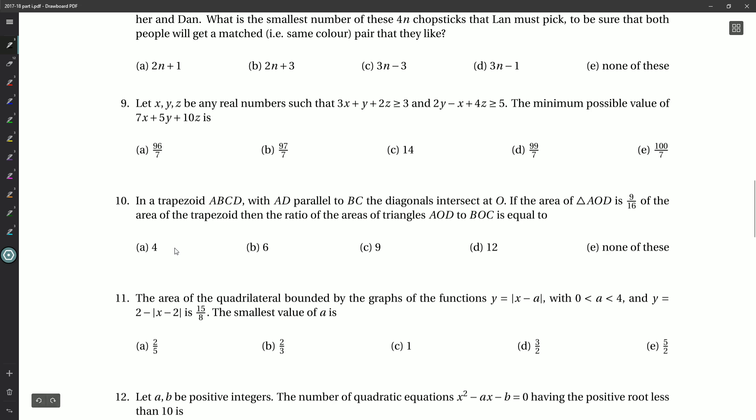Hello everyone, and welcome back. Hope you're doing all right. We're looking at question 10 now on our 2017-2018 Part 1 paper. In the trapezoid ABCD with AD parallel to BC, the diagonals intersect at O. Let's start drawing a picture here.